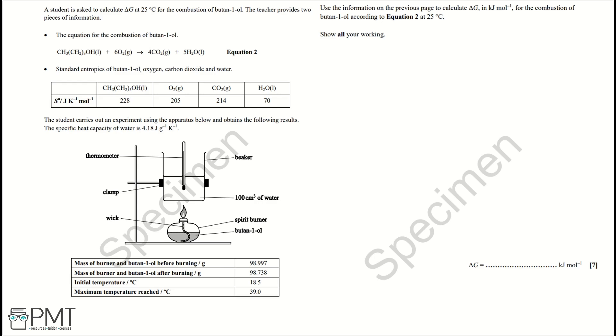Firstly, let's highlight the key pieces of information. Our first key piece of information is equation 2. And then our second key piece of information is our standard entropies of butan-1-ol, oxygen, carbon dioxide and water. Also, the specific heat capacity of water and the volume of water that we're using in this experiment.